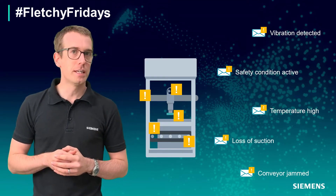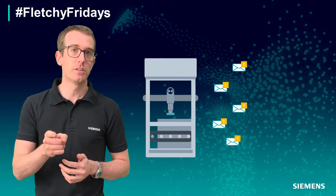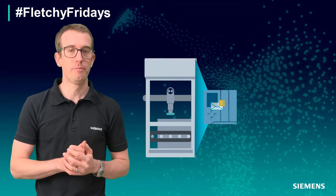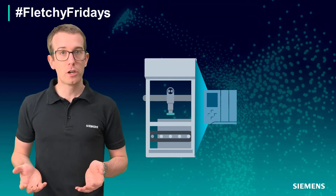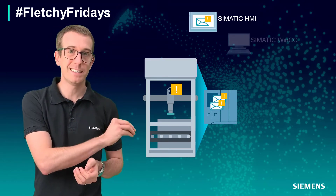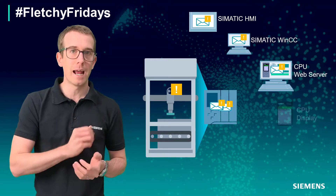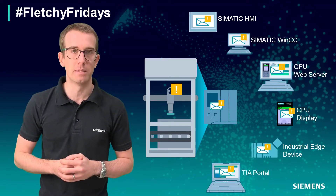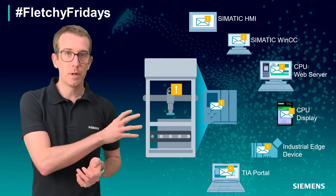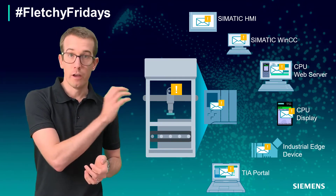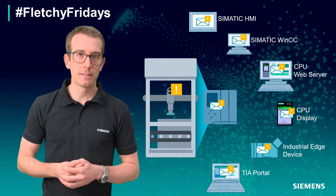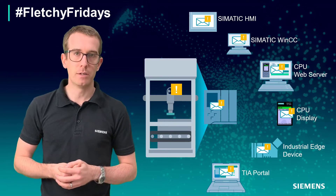ProDiag allows you to centralize the creation of your alarm messages within the S7-1500 application code, meaning that if a fault does occur in operation, the S7-1500 is going to issue a consistent alarm message out to the connected visualization systems — be it our HMIs or SCADAs, the inbuilt CPU web server, the edge devices, or even to TIA Portal, the engineering software, which has an alarm display built in as well.